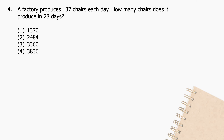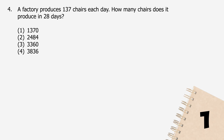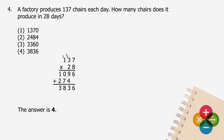Question 4: A factory produces 137 chairs each day. How many chairs does it produce in 28 days? The factory is able to produce 3,836 chairs in 28 days. The answer is 4.